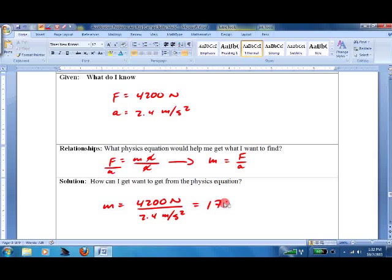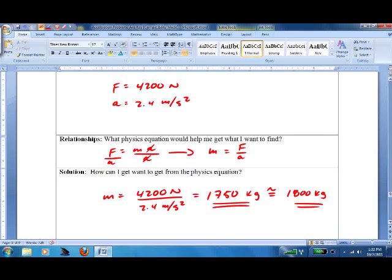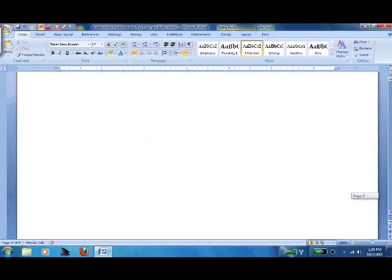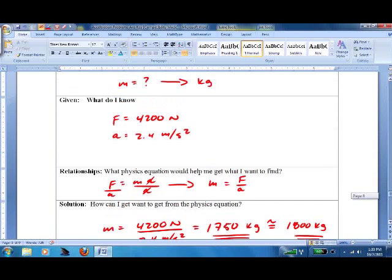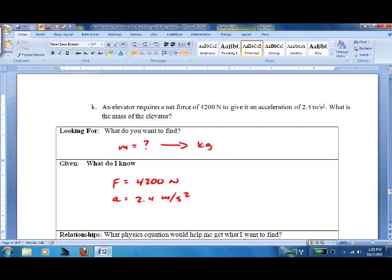We get exactly 1,750 kilograms. If we were still rounding, we would get 1,800 kilograms. Notice I don't have to worry about the units, because the newtons and the meters per second squared all take care of themselves. We know we're going to get kilograms. That still leaves you a few problems to do. Get kicking on them. I'll give you some more to work on on Tuesday. Good luck.